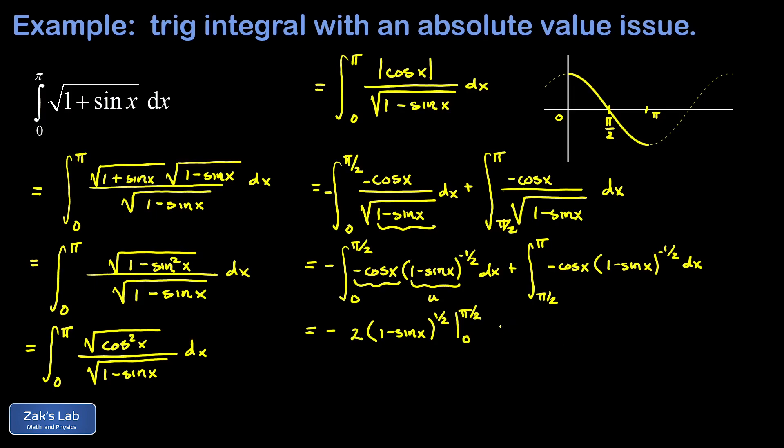We do the same thing with the second integral and it's really just the same integrand so we already know what the answer is. I end up with a 2 times the quantity 1 minus sine x to the positive 1 half evaluated from pi over 2 to pi.